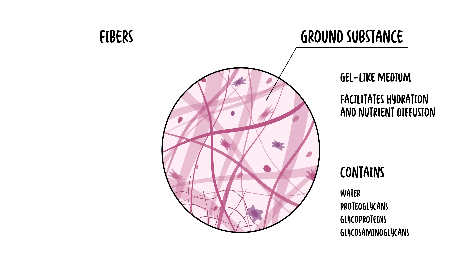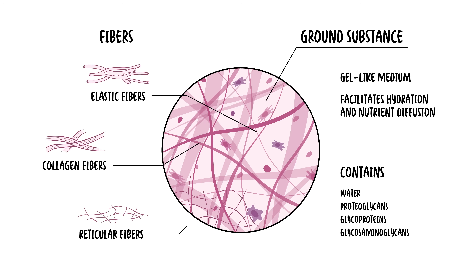The fibers are what is produced by the fibroblasts, the main cells in connective tissue. There are three fiber types: collagen, elastic, and reticular fibers, each contributing distinct properties to the tissue. Collagen is the most abundant, and it is tough. Elastic fibers allow for stretching and recoil, whereas reticular fibers are quite strong and rigid as well.